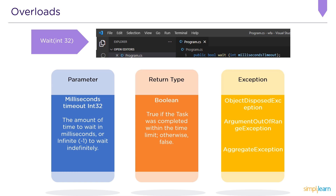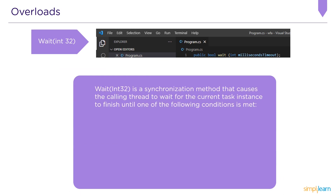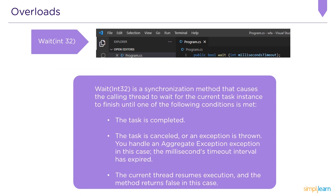The third exception is AggregateException, defined when the task was cancelled: the TaskCancelledException object is found in the InnerExceptions collection, or an exception was thrown during task execution. Wait(Int32) is a synchronization method that causes the calling thread to wait until one of the following conditions is met: the task completes, the task is cancelled or an exception is thrown, or the milliseconds timeout interval has expired and the method returns false.